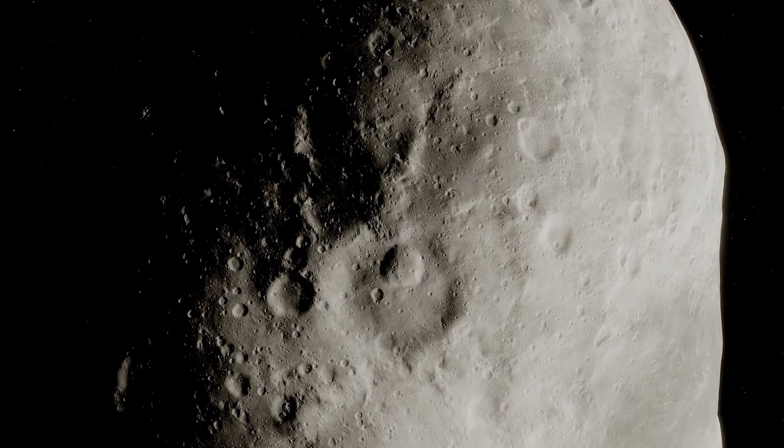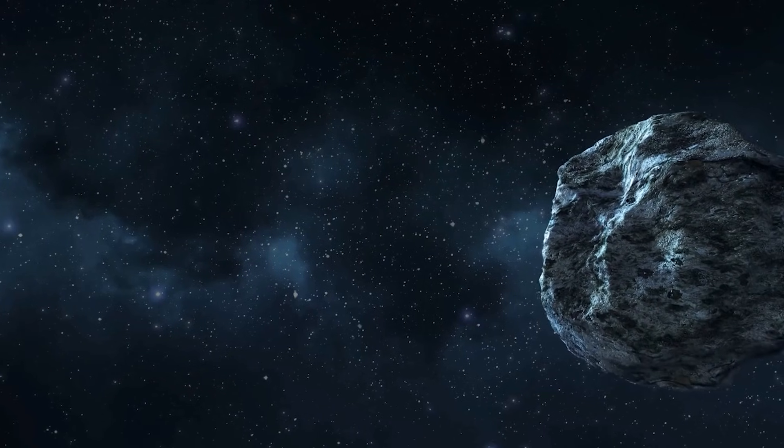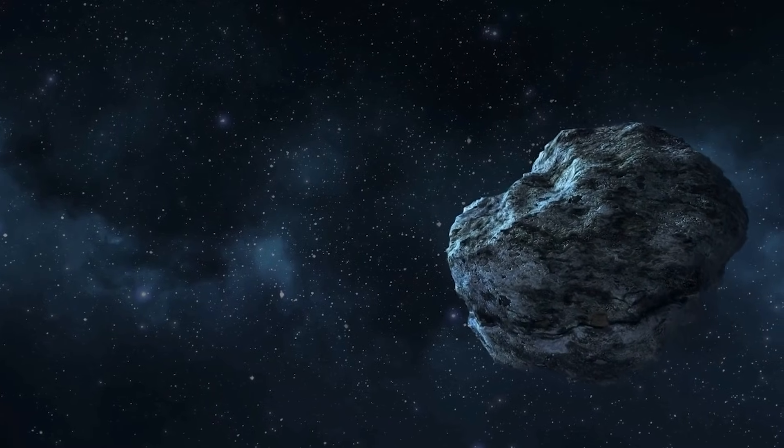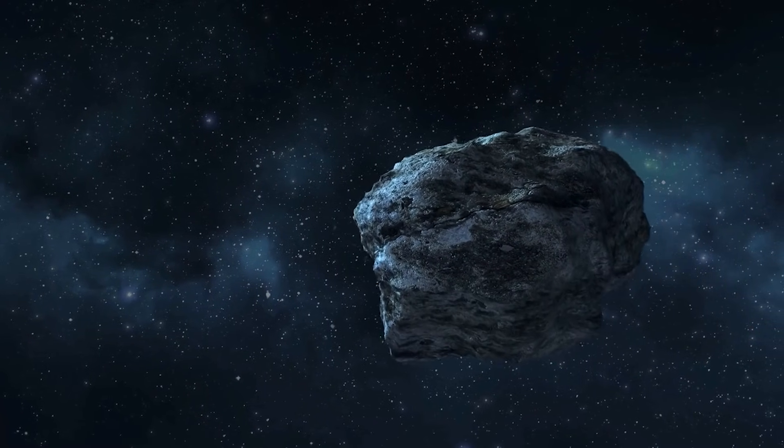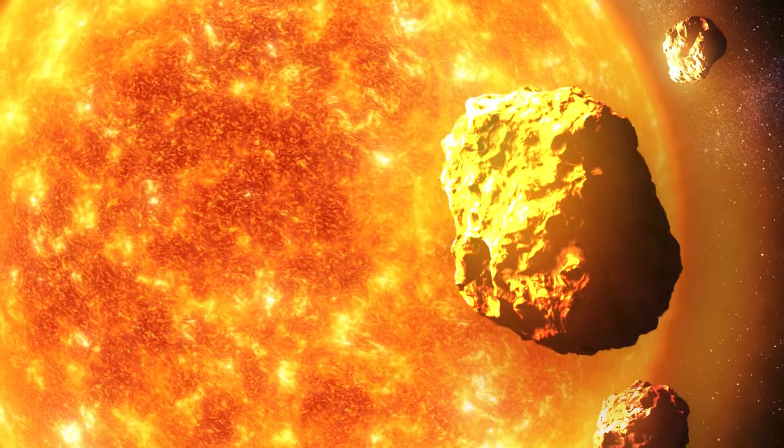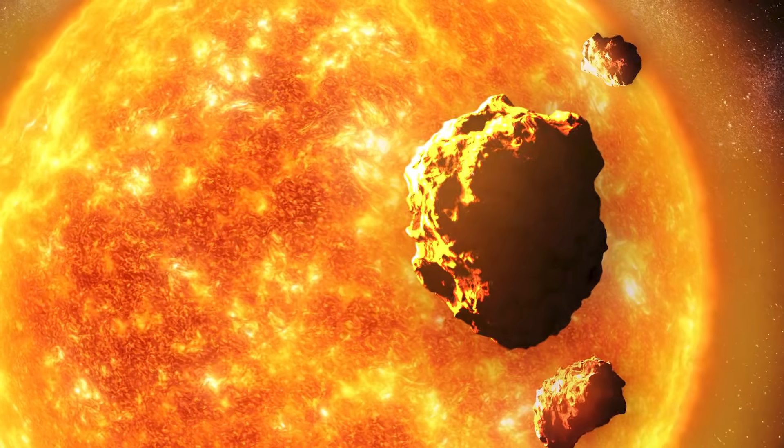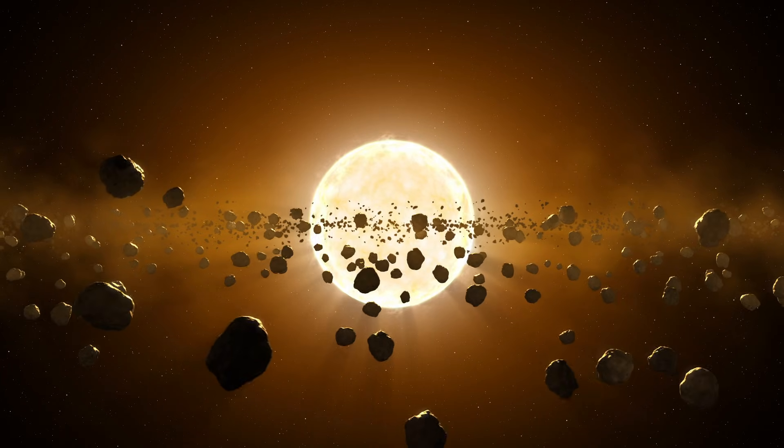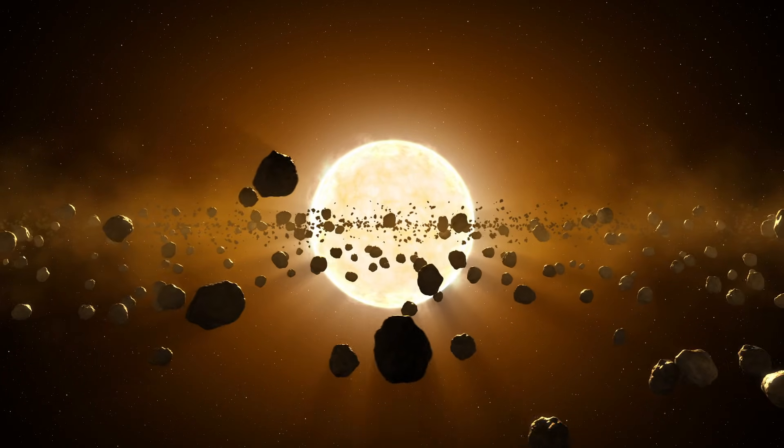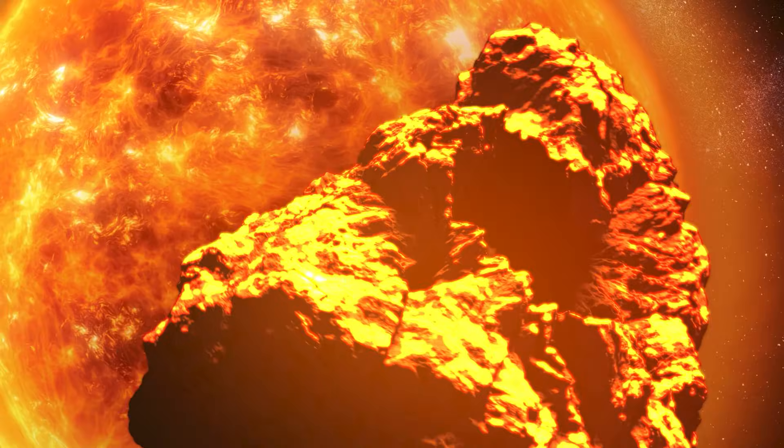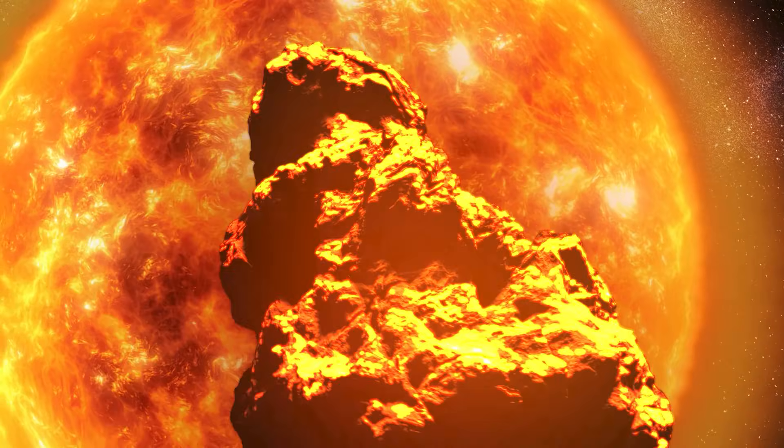An asteroid hundreds of meters in diameter seems, at first glance, like a gigantic, heavy stone, impossible to be moved. But then comes the invisible factor. The sun's heat warms the side of the asteroid facing it, and that heat is released back into space in the form of thermal radiation. This process seems insignificant, but it's like a force that slowly pushes Apophis out of its original path.